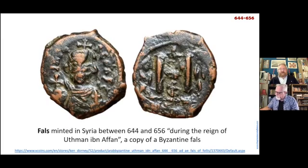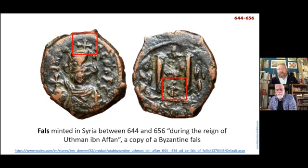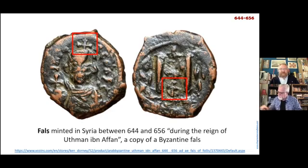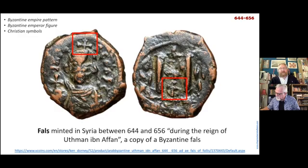It's the same also with this coin — another coin minted between 644 and 656, which is also a copy of a Byzantine follis. We still have the crosses, we still have the Byzantine emperor figure. How could a Muslim in his right mind put a Christian sovereign on his own coins? This is not a Muslim coin. This is a Christian coin, or quasi or pseudo-Christian coin. Still the same Byzantine Empire pattern, Byzantine Empire figure, and Christian symbols.